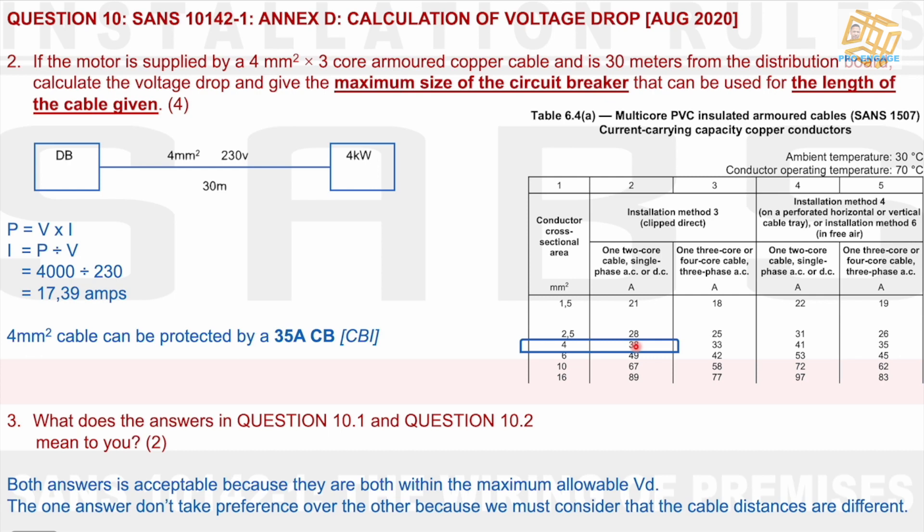Does the examiner know? I'm not sure, but I would trust that he would. But I'd rather put the information down on the answer sheet. So 4 millimeters squared cable can be protected by a 35 amp circuit breaker. Why 35 amp? Because I do not get a 38 amp breaker. And 40 amps would be too high. It's overrating. Not good for the cable. 35 would be the closest. I therefore then say 35 amp circuit breaker is my answer.